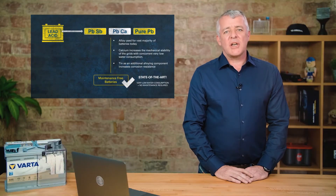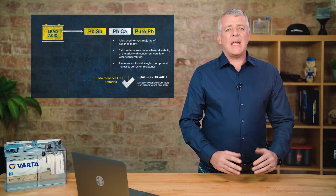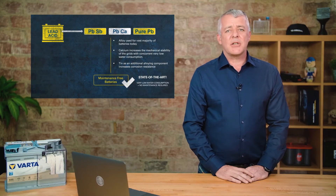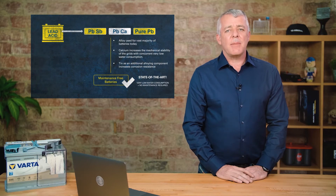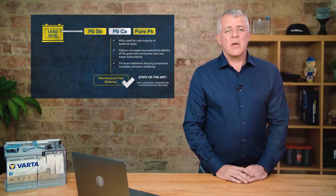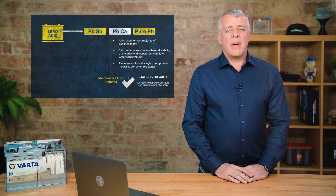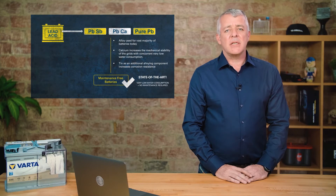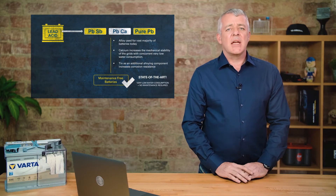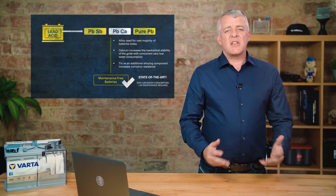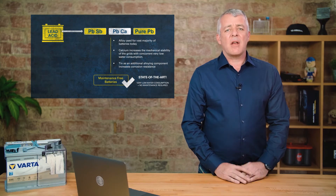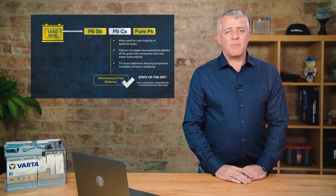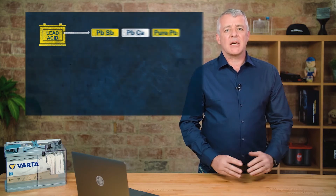In the past, during the transition from PBSB batteries to maintenance-free batteries, lead silver was also used — so-called PAG batteries, where AG stands for silver. These have been completely dropped from our range and replaced with PBCA batteries.